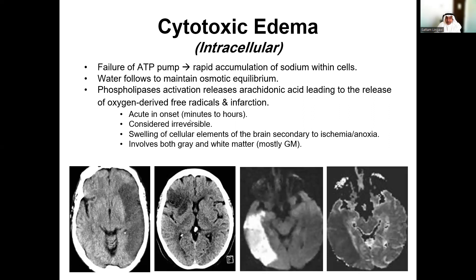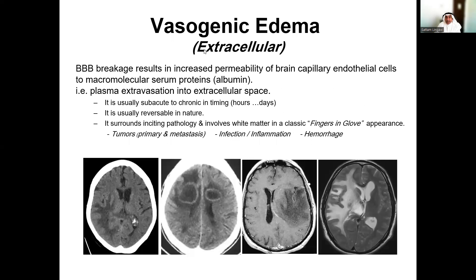The second type is vasogenic edema, and it is extracellular. In vasogenic edema, there is a break in the normal function of the blood-brain barrier, resulting in increased permeability and dilatation of brain capillaries, with leakage of blood plasma from the intravascular to the extravascular space. There is a leak of albumin and plasma into the brain parenchyma. It is usually subacute and may be chronic, and is usually reversible with treatment of the underlying etiology.